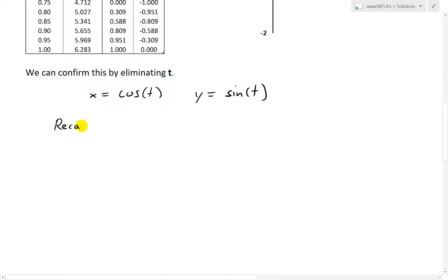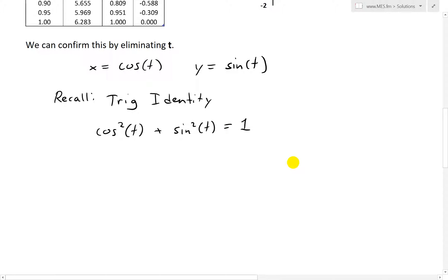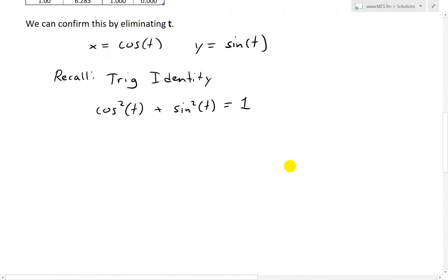So now what we do next is, if we recall the trig identity, which I've gone over in my earlier videos, recall the trig identity where we have cosine squared of t plus sine squared of t equals 1. So when we have a squared like this, this is the most common trig identity. But since we have x equals cosine of t and sine of t is equal to y, what we can do is write this down as x squared plus y squared equals 1.